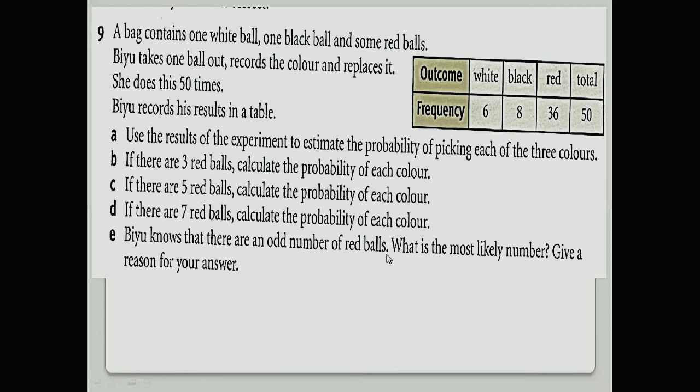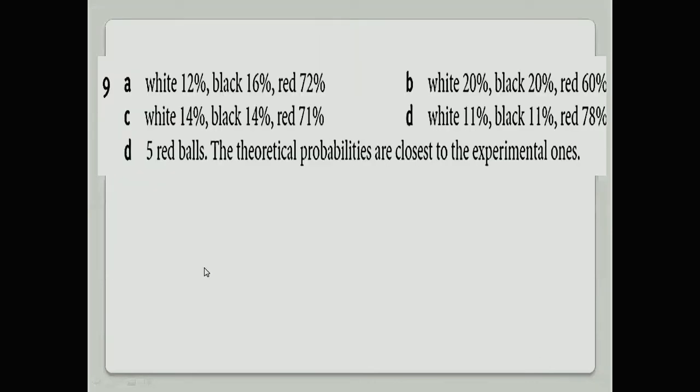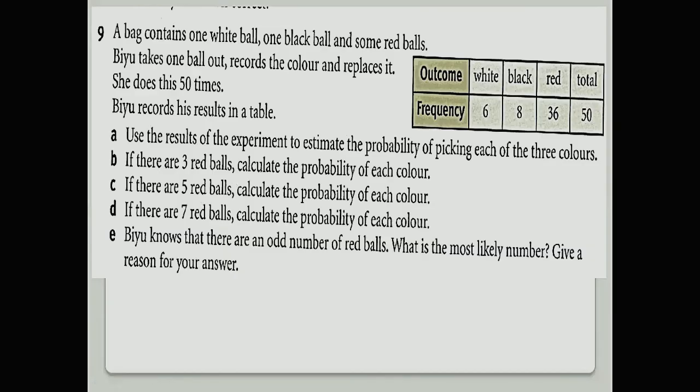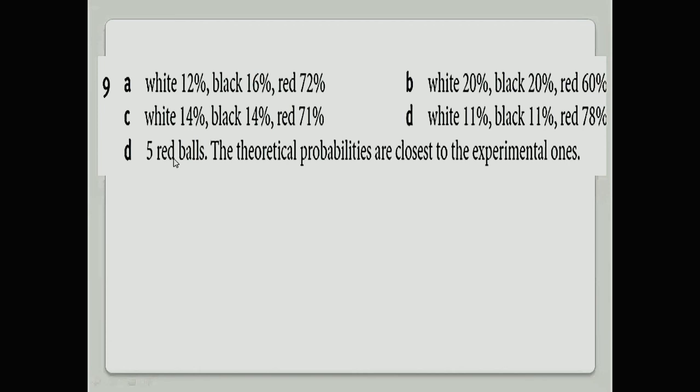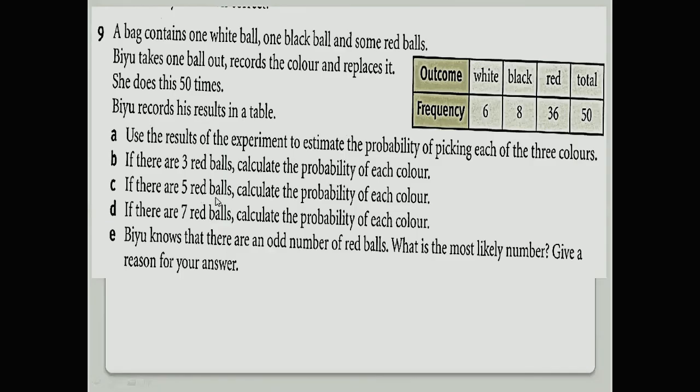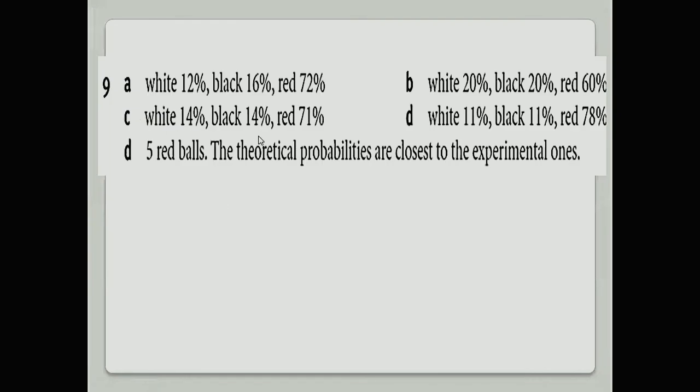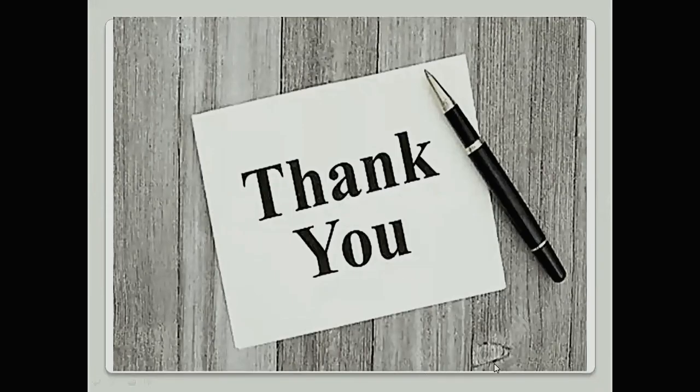With the help of this, we are finding the last part: if there are odd numbers, which probability? Here is three (also odd), five (also odd), and seven (also odd). Which is most likely? I think five red balls are most likely because we see, we just theoretically solved this, so we understand all the steps. Five balls is very closest to experimental ones.